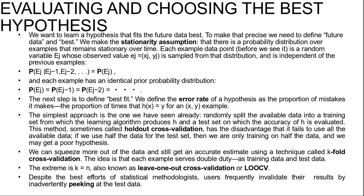We want to learn a hypothesis that fits the future data best. To make that precise, we need to define future data and best. We make the stationary assumption that there is a probability distribution over examples that remains stationary over time, and each example data point is a random variable Ej whose observed value Ej equals (xj, yj), sampled from that distribution and independent of previous examples.